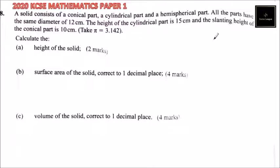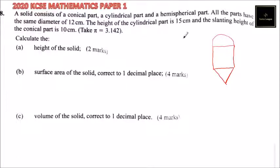It is important that we have a sketch. That is the hemispherical part, this is the cylindrical part, and this is the conical part. We are told that the cylindrical part is 15 cm. They have the same diameter of 12 cm, and the slanting side of the cone is 10 cm. We are required to find the total height from the top to the bottom.